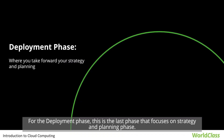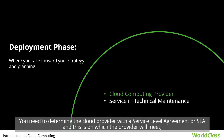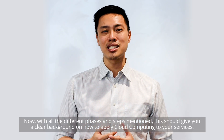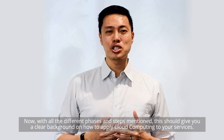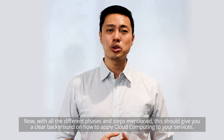For the deployment phase, this is the last phase that focuses on the strategy and planning phase. There are two steps involved. First is the cloud computing provider: you need to determine the cloud provider with a service level agreement, or SLA, which defines what the cloud provider will meet. Second is service, technical, and maintenance, which is provided by the cloud provider to ensure service quality. With all the different phases and steps mentioned, this should give you a clear background on how to apply cloud computing to your services.